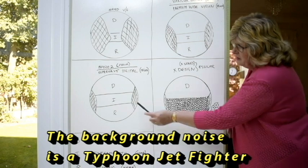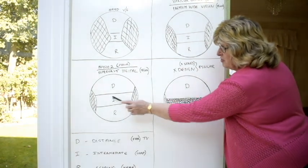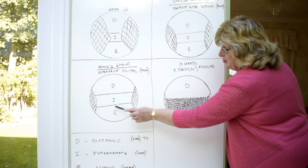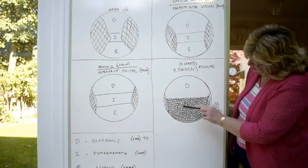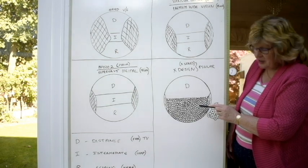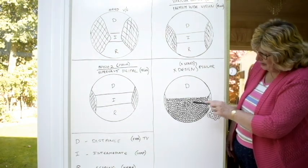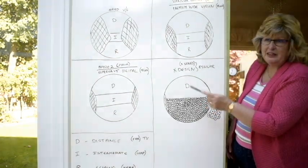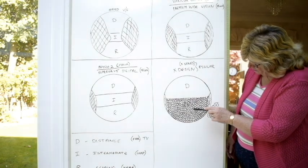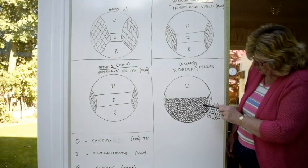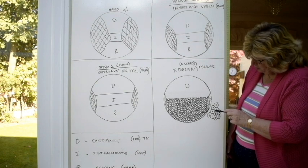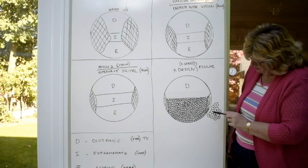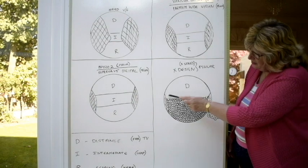And instead of doing an intermediate area where it's solid vision, one solid block for intermediate, one solid block for reading, you can see here these are all tiny little cells. They're like hexagonal, they're not round. I've just drawn them round for ease. They're more like this. They're all little connecting hexagonal shaped cells. So this is all solid distance.